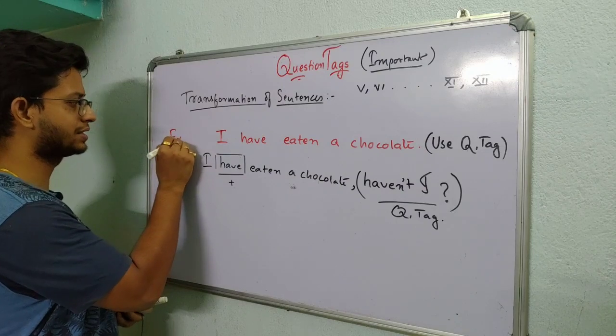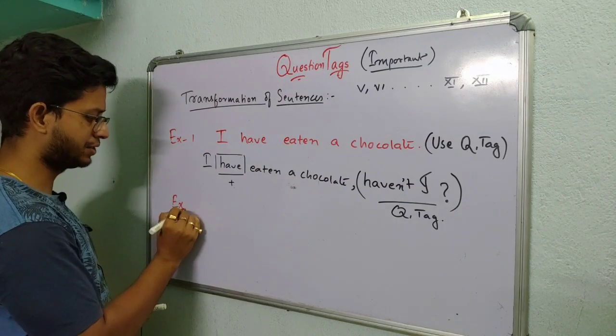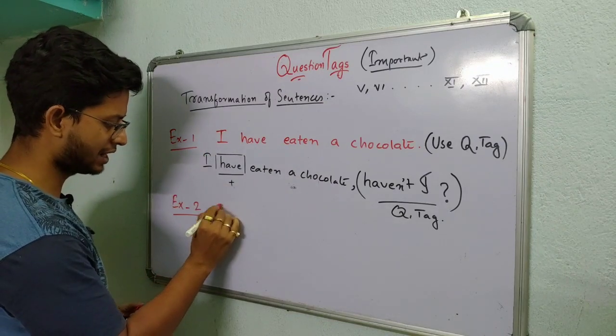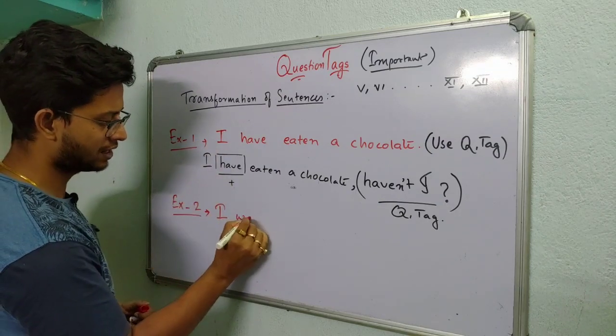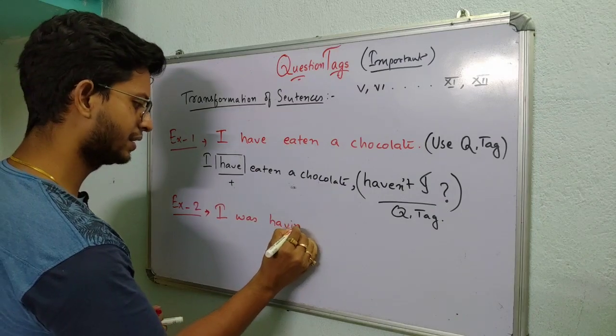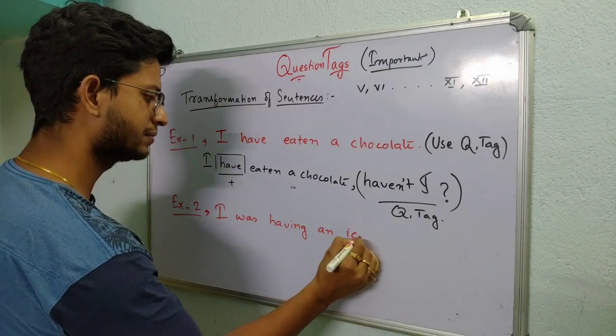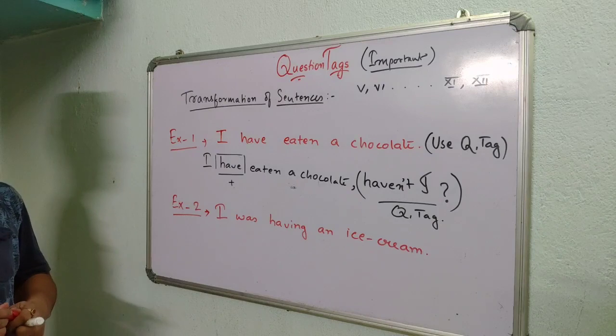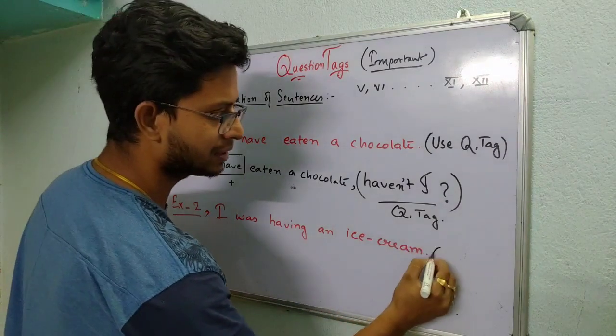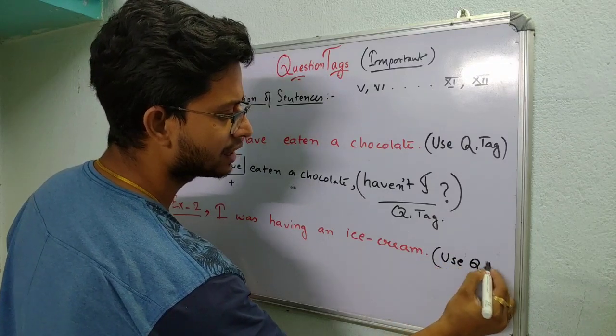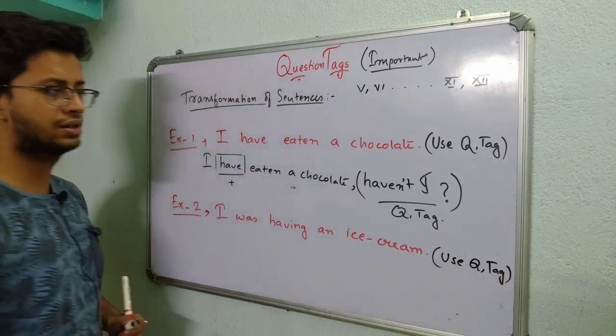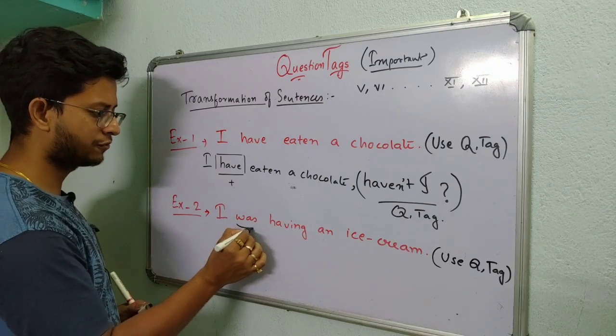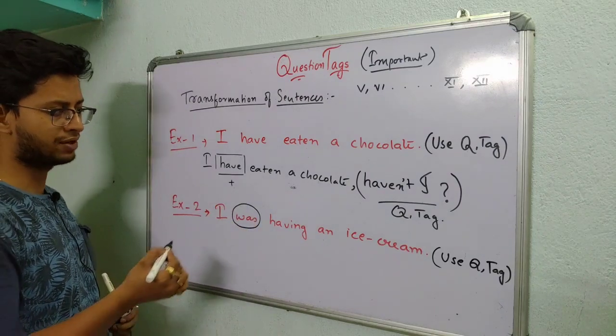Let's take one more example. This is example one. Let us take example two. Listen carefully. In example two, let's do: I was having an ice cream. First step. In this also you are given the same instruction to use question tag. Sometimes they give you use question tag and sometimes they give a blank. They give a dash and you have to fill it. So what to do in this? As I told, first step is what? You have to find out the helping verb. You already know what is a helping verb.